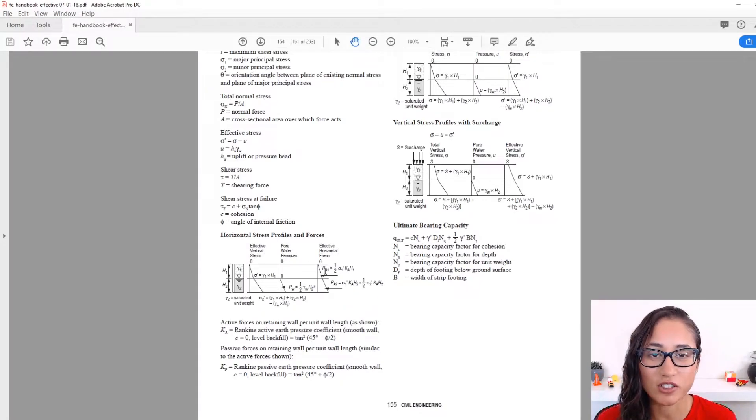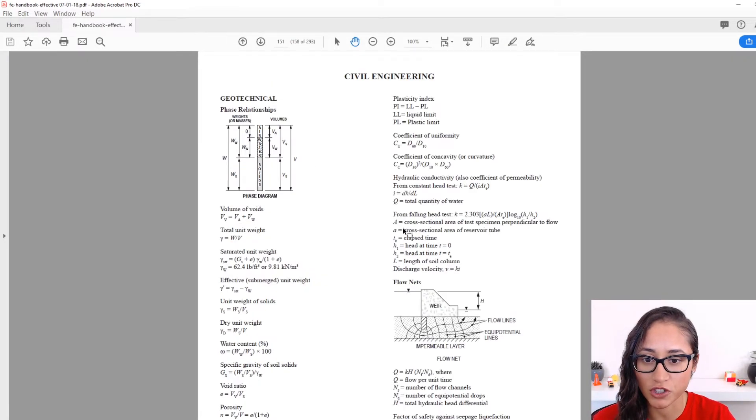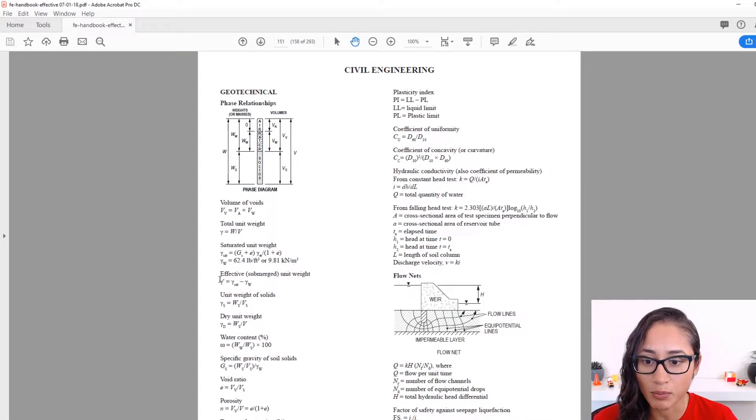So if you guys type in ultimate bearing capacity on the FE reference manual, it will take you to page 154 which is under geotechnical engineering. Now this is the equation we're going to use but just be careful because here you are given gamma prime. Now if we go to the first page of geotechnical engineering, gamma prime which is the effective unit weight is equal to gamma saturated minus gamma water.